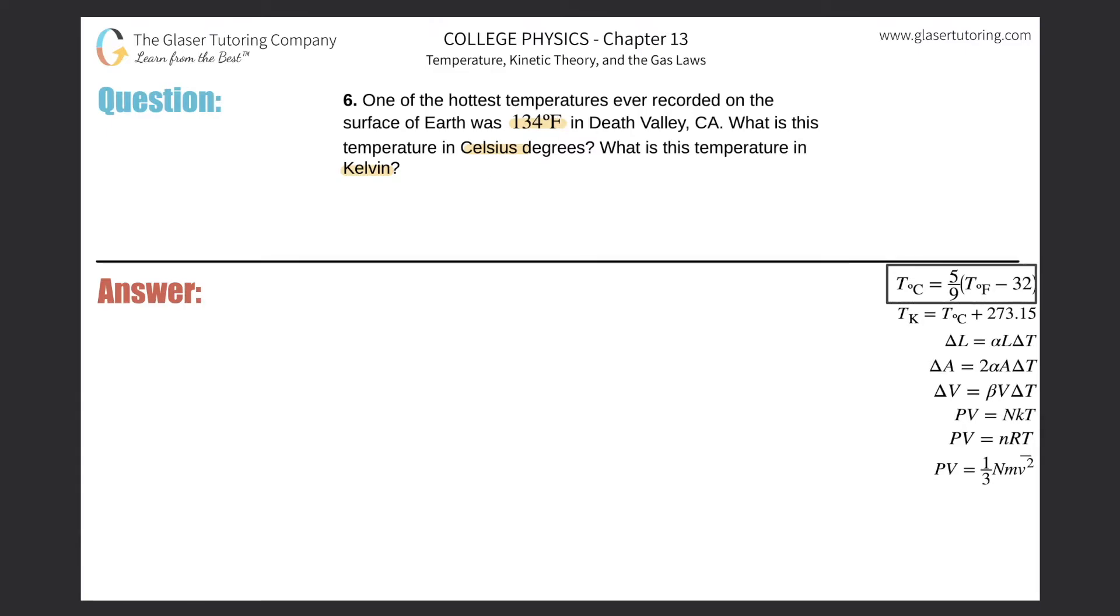The top one on the right hand side shows that the Celsius temperature will be equal to five ninths multiplied by the Fahrenheit temperature minus 32. So this is easy, all this is is a plug-in. This is 134 minus 32, and the Celsius temperature will now be five over nine times 134 minus 32.